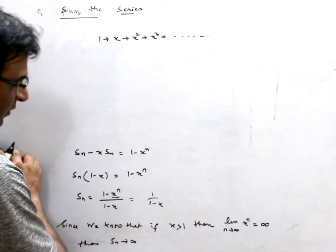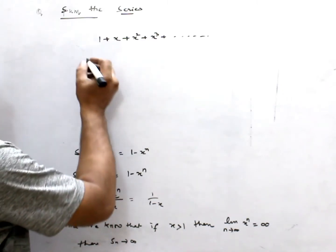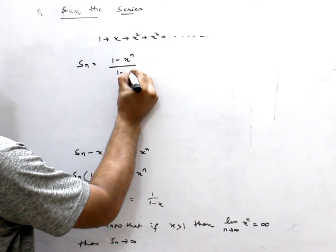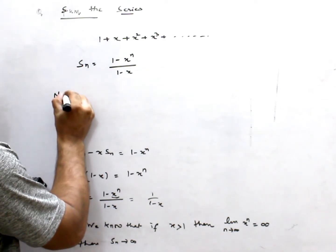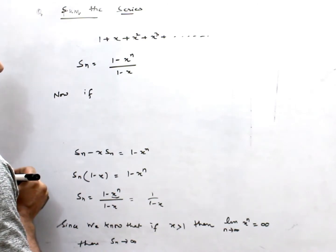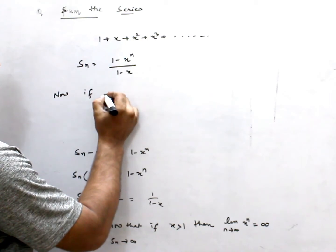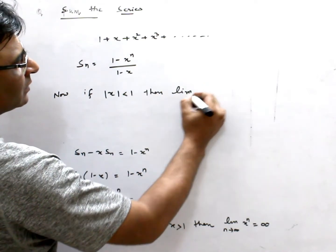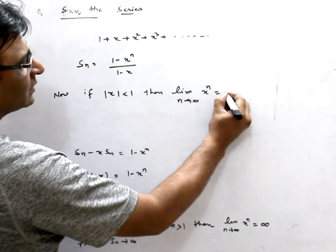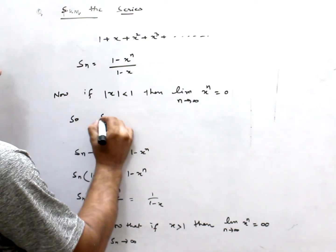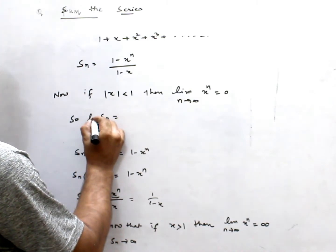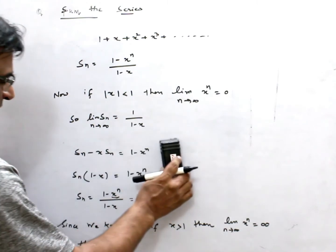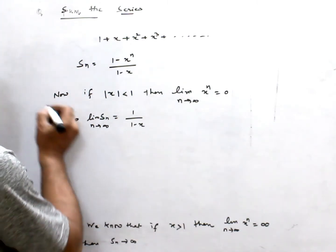We have found the partial sum is (1 minus x to the n) divided by (1 minus x). Now, if x is less than 1, then the limit as n approaches infinity of x to the n is 0. So the limit of Sn as n approaches infinity is 1 divided by (1 minus x).